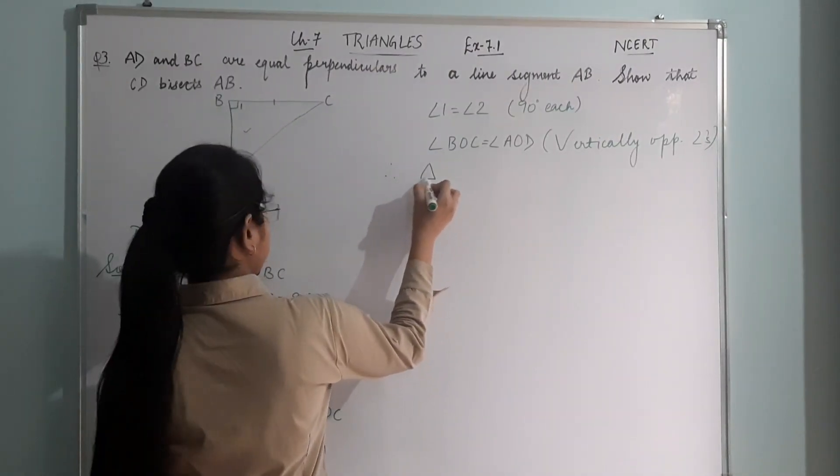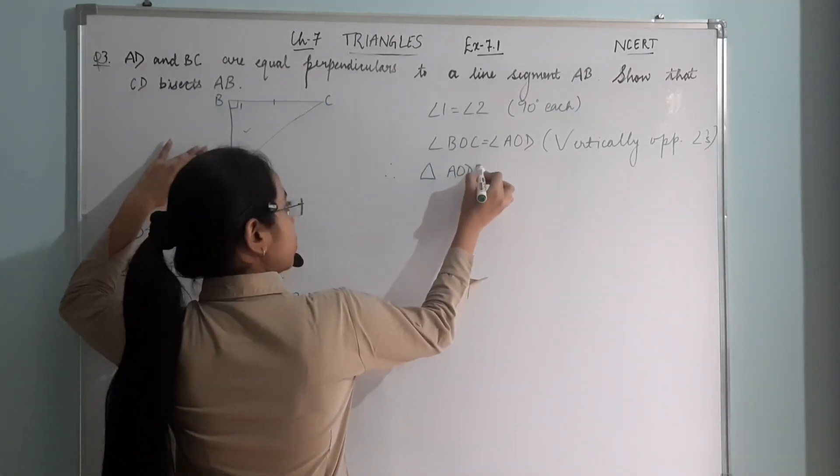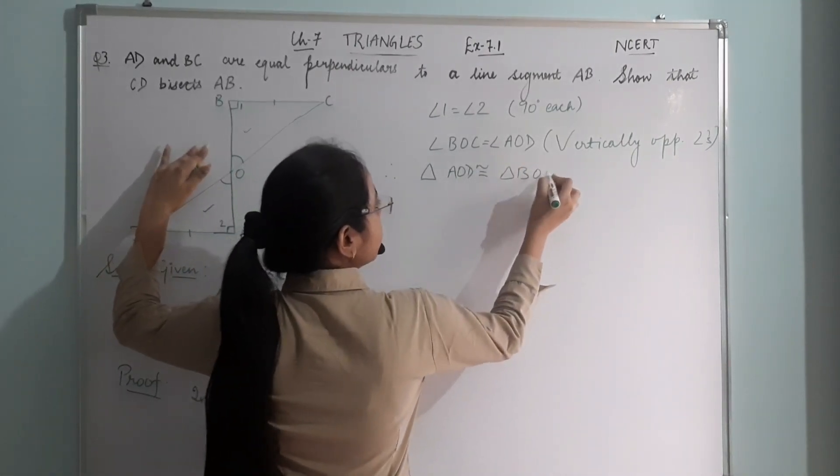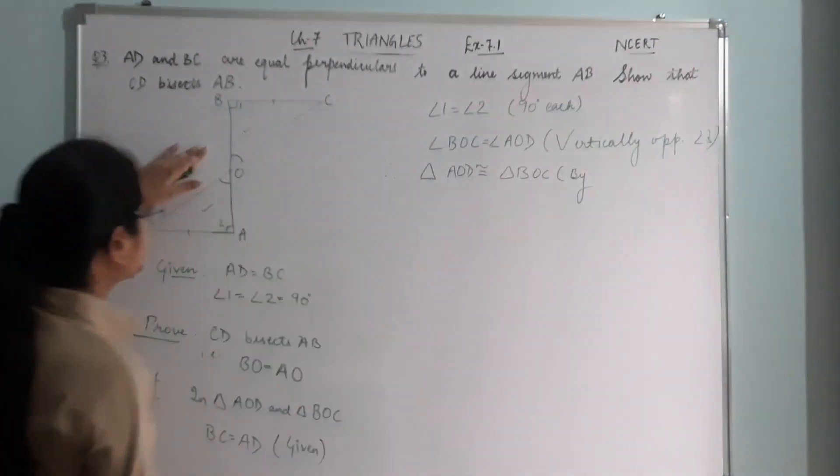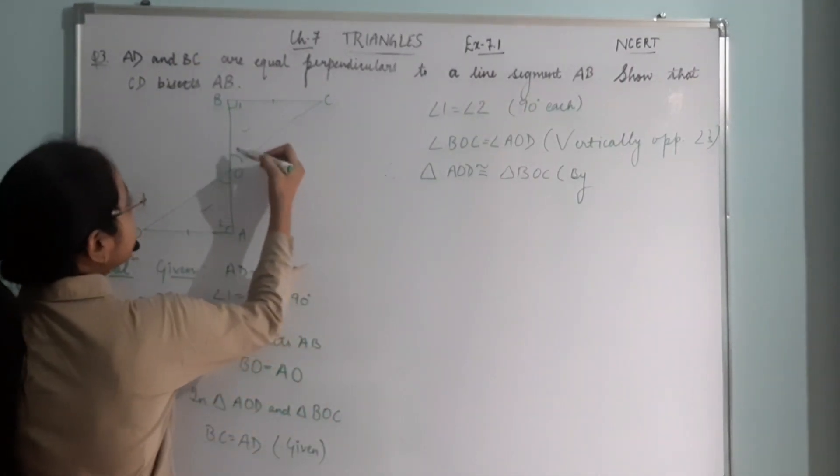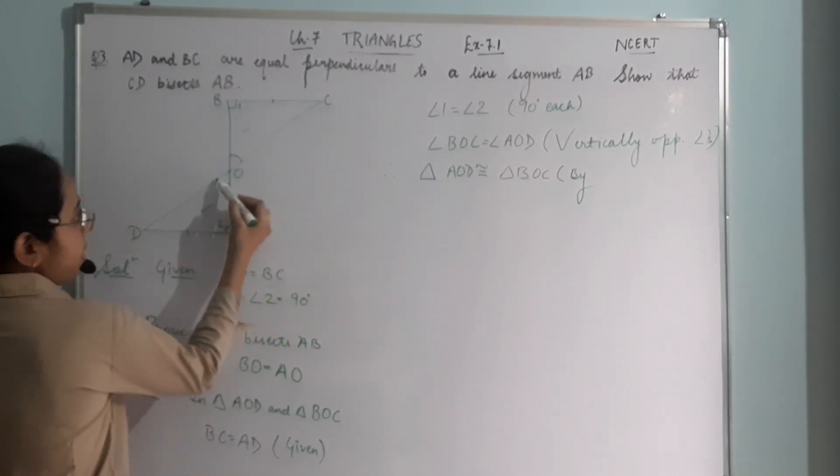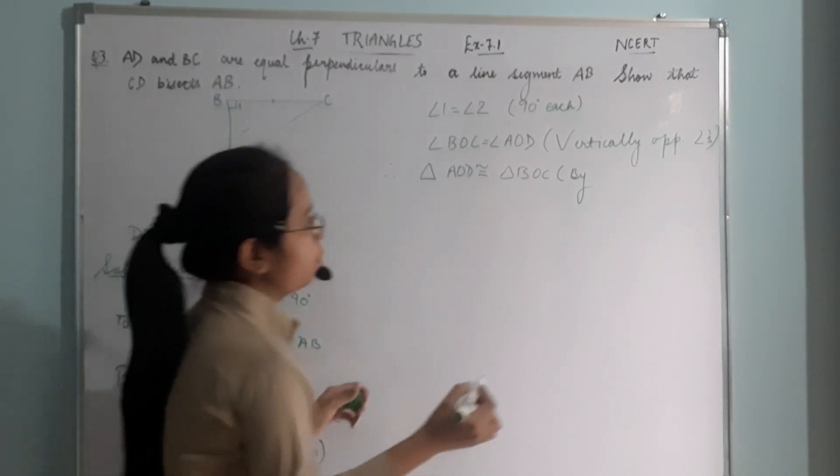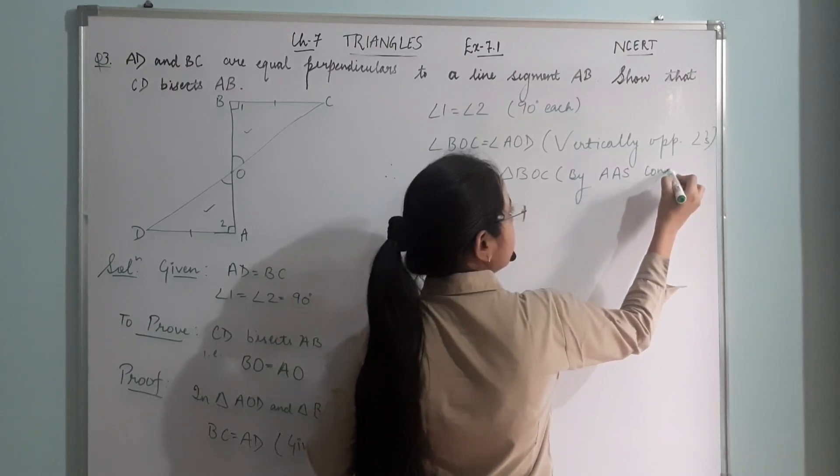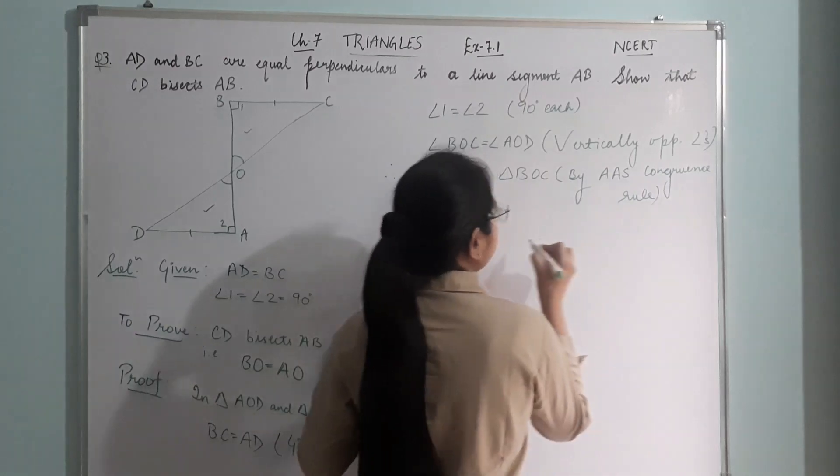Therefore, triangle AOD is congruent to triangle BOC by angle, angle, side. Similarly here, angle, angle, then side. So by AAS congruence rule.